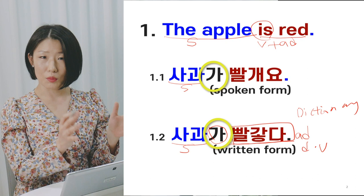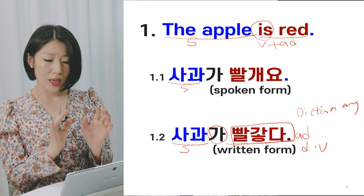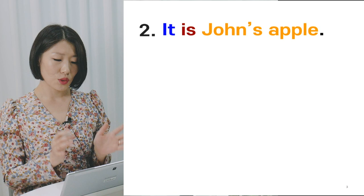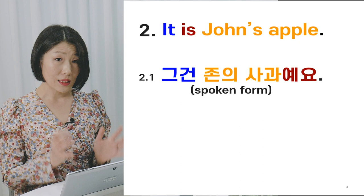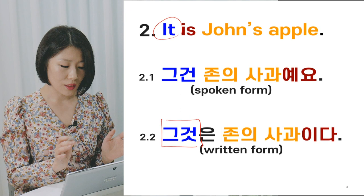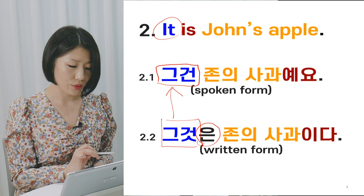The next sentence is 'It is John's apple.' The spoken form is 그건 존 사과야 and the written form is 그것은 존의 사과이다. 이 is another subject particle or subject marker. In the spoken form, 그것은 is shortened to 그건. The final consonant ㄴ combines with 그것 to make 그건. 그것 is the more polite and formal style, while 그건 is the spoken style.